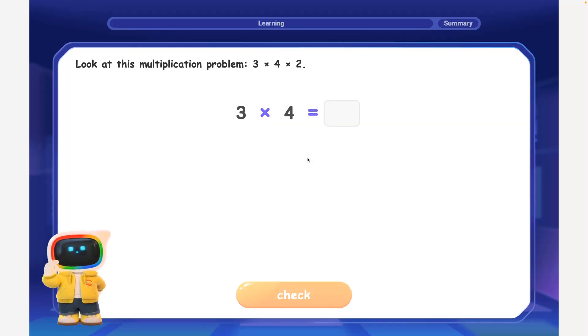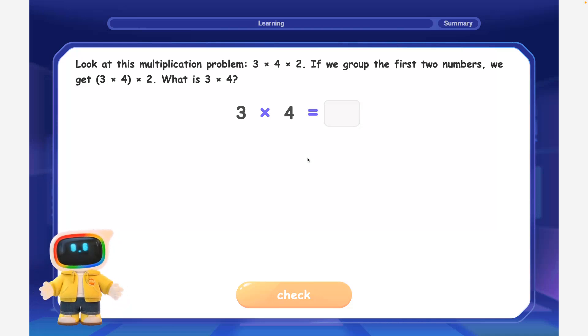Look at this multiplication problem: 3 times 4 times 2. If we group the first two numbers, we get 3 times 4, times 2. What is 3 times 4?